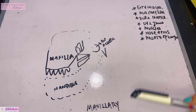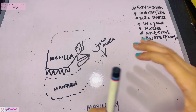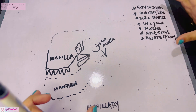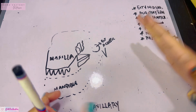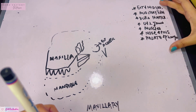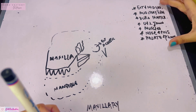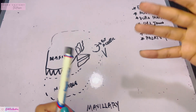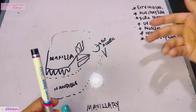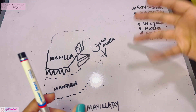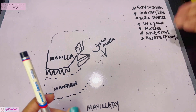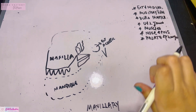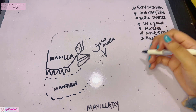Before we get started, I want you to remember that the major supply of the maxillary artery includes all of these structures. Memorize all of these, and then even when we talk about the branches, you don't have to individually remember what they supply — the branches will supply everything listed here.